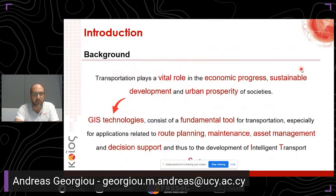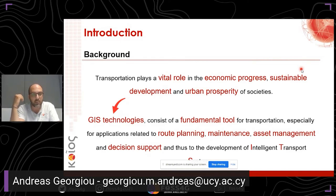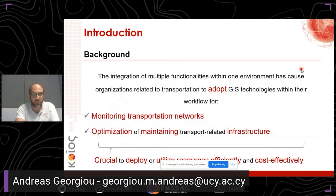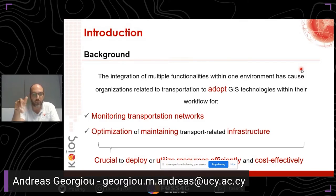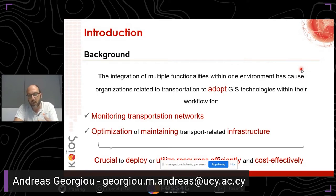Transportation plays a vital role in economic progress, sustainable development, and urban prosperity. GIS technologies are a fundamental tool for transportation, especially for applications related to route planning, maintenance, asset management, decision support, and the development of intelligent transport systems. The integration of multiple functionalities within one environment has enabled organizations to adopt GIS in their workflow. Monitoring transportation networks from a geographical perspective is crucial for deploying and utilizing resources efficiently and cost-effectively.